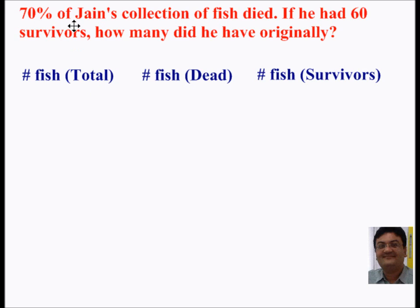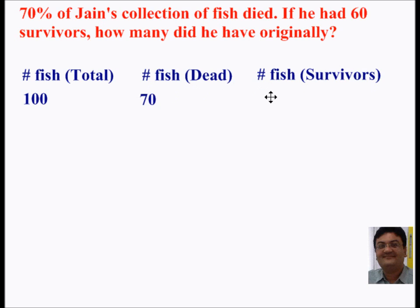Now let's define 70% in terms of the problem given. Here I'm taking the total number of fish as 100. So out of that, 70% are dead, so 70 are dead, and therefore 30 survived.